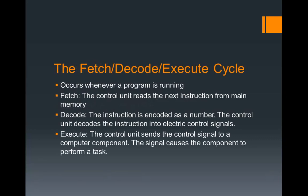So you may be wondering: the CPU has these two portions, but how do they really work? How does the CPU know what to do? Basically, that's what this cycle is — the fetch, decode, and execute cycle. This cycle occurs any time a program is running.